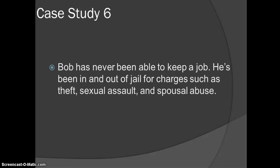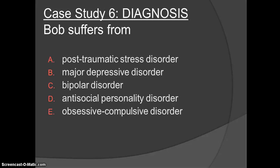Case 6. Bob has never been able to keep a job. He has been in and out of jail for charges such as theft, sexual assault, and spousal abuse. Bob suffers from D, antisocial personality disorder. This is a personality disorder in which the person exhibits a lack of conscience for wrongdoing, even towards friends and family members. The person may also be aggressive and ruthless, or a clever con artist.